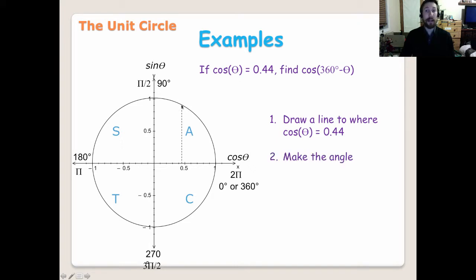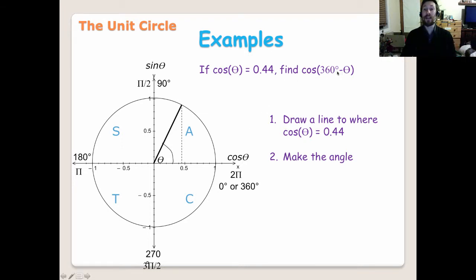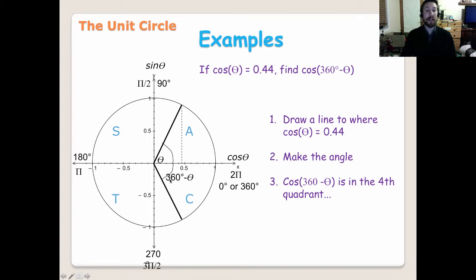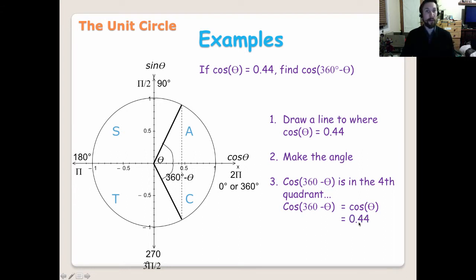We're now going to make our angle by making the line. And as you can see, this here will be theta. Now, we don't know what theta is once again — it doesn't matter what it is. But what does matter is that we get the right quadrant. So now it's saying find cos of 360 minus theta. So if we go all the way around to 360 and then we minus that same size angle roughly, it's going to come down to roughly here, isn't it? Therefore, it's going to be in the fourth quadrant. Now therefore, cos of 360 minus theta is really going to get us the same answer for cos. So therefore, cos of 360 minus theta is the same as saying just cos of theta, because it's going to give us the exact same answer. So therefore it's going to be equal to 0.44 once again.